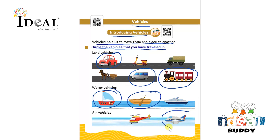Then the air vehicles. So here you have to circle the vehicles in which the children have traveled in, and this will complete the worksheet. There are land vehicles, water vehicles, and air vehicles. So you can read the vehicles with the children too.